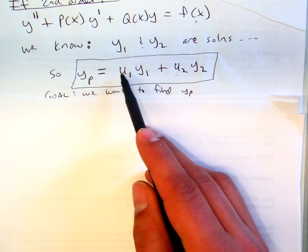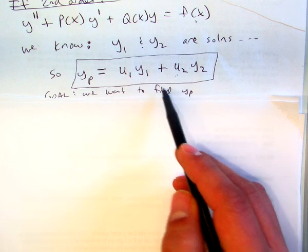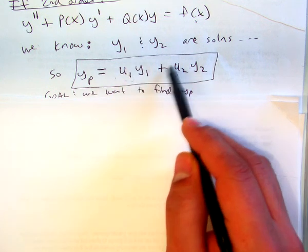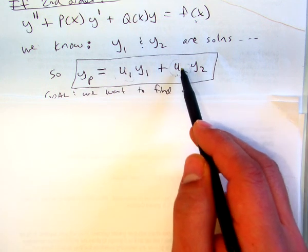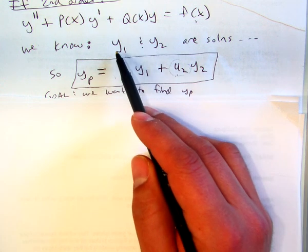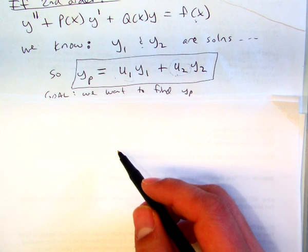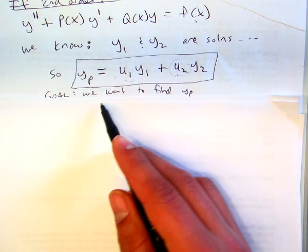The parameter u1 times y1 plus u2 times y2. And we are in search of this u1 and u2. Once I have those, since we already know y1 and y2, then I can construct the general solution, which would just be the complementary function plus the particular solution here.